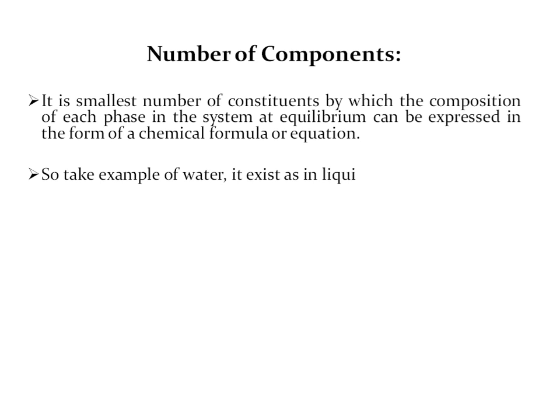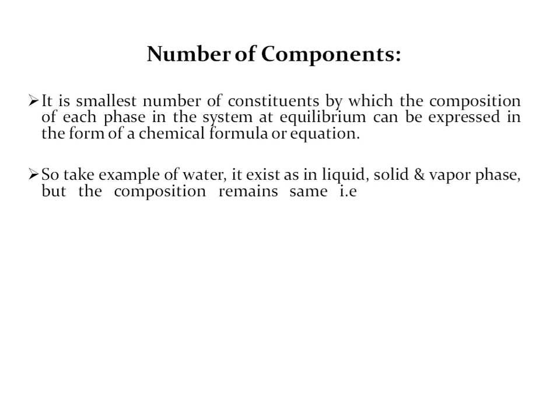Take the example of water. It exists as liquid, solid and vapor phases, but composition remains the same. Suppose you have all three phases of water — still it has the same formula H2O, whether it is in liquid, vapor or ice form. That is why this system consists of one component because only one component, that is water, is there.